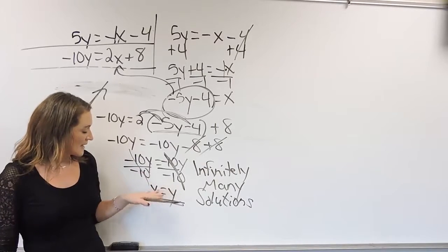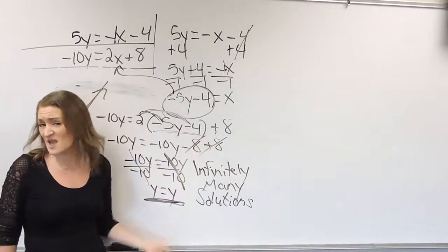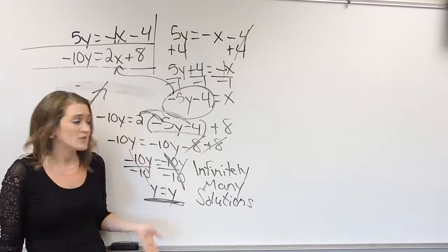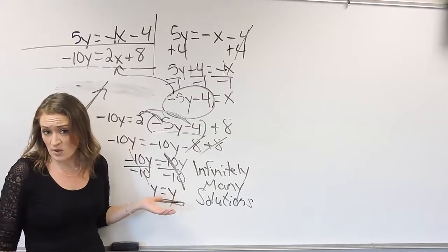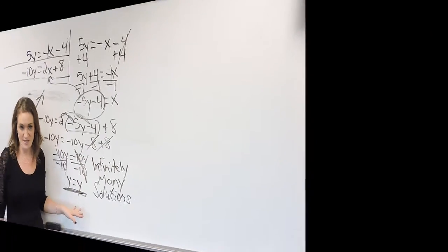So varying answers could look like y equals y, x equals x, 10 equals 10. Or something like that. But x does equal x, 10 equals 10, y equals y. This is what an infinitely many solutions looks like.